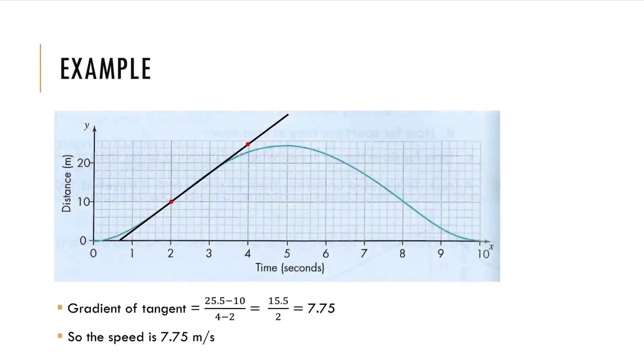So, we have an example for it. You have to draw a tangent and then take two points in it. You then have to find the gradient of the tangent, which is the difference between the y's over the difference between the x's of the two points. In this situation, it is 15.5 over 2, which is 7.75. So, the speed is 7.75 meters per second. And finally, thank you for listening and that's all for chapter 11 and chapter 14.